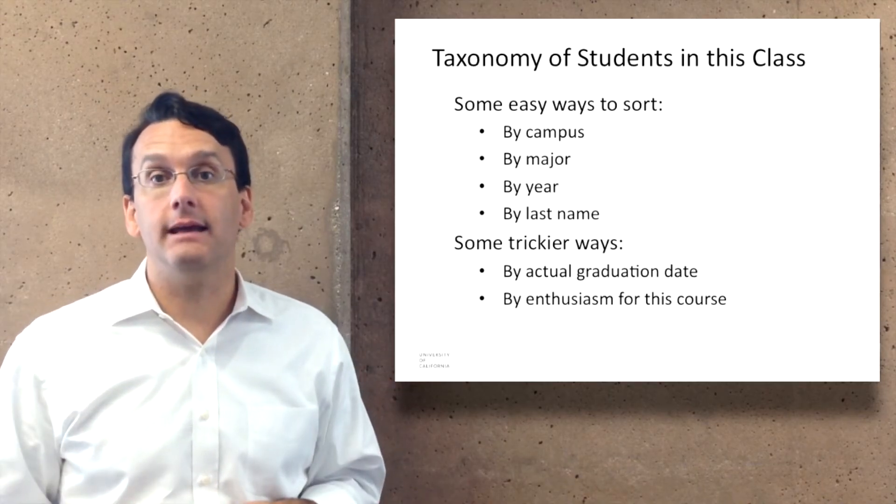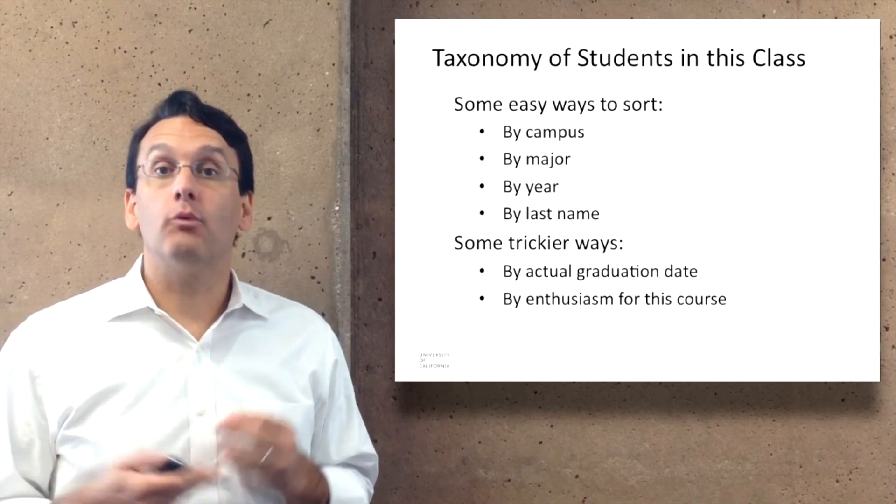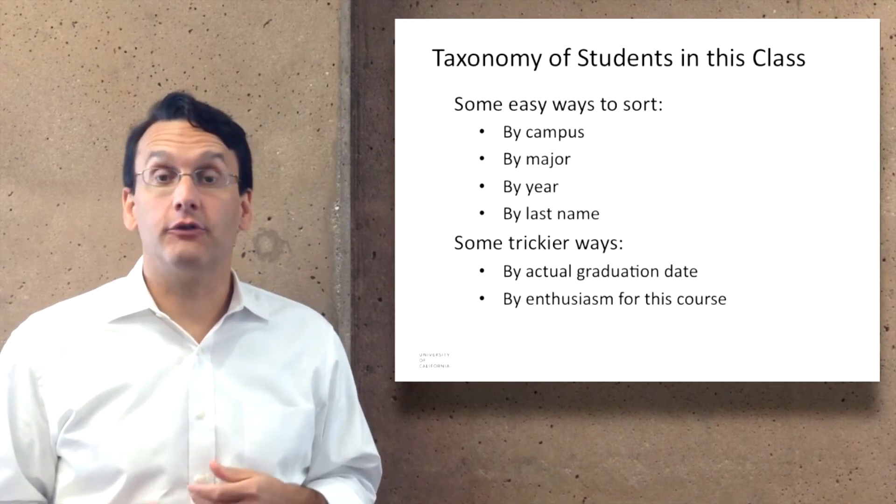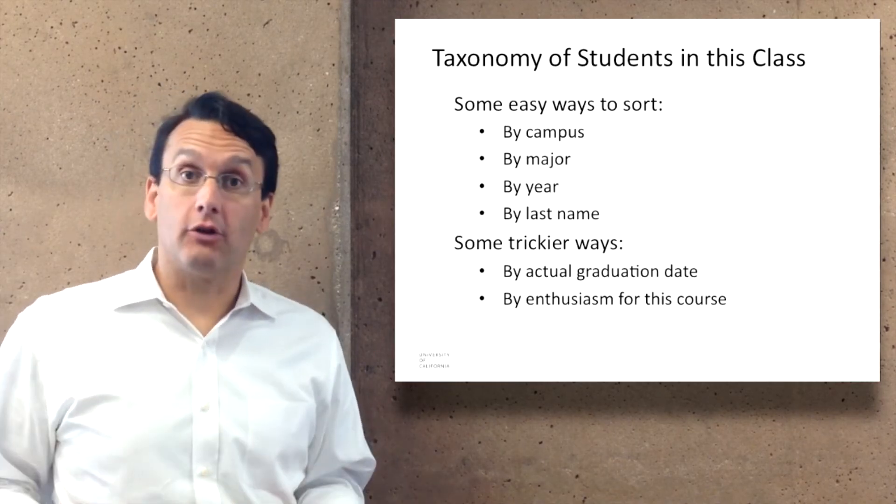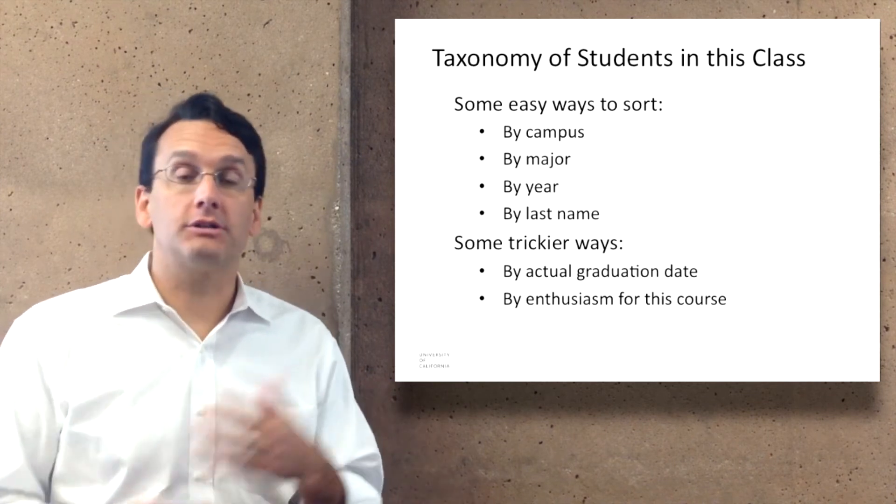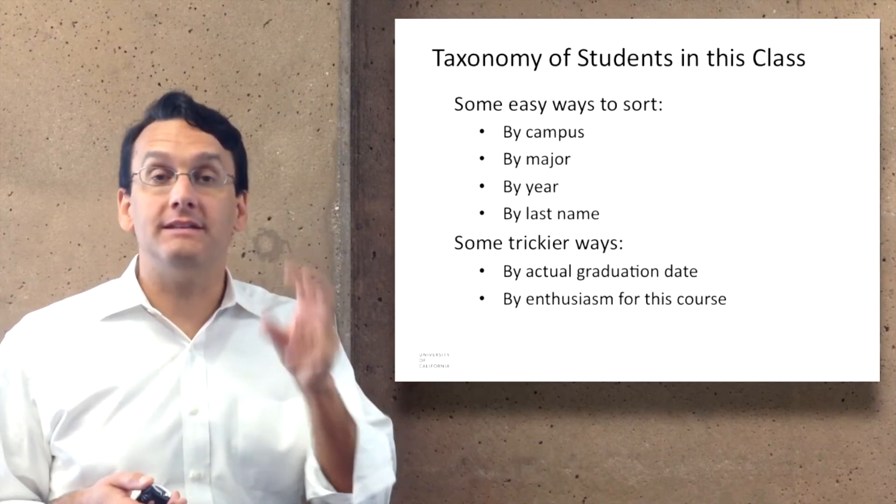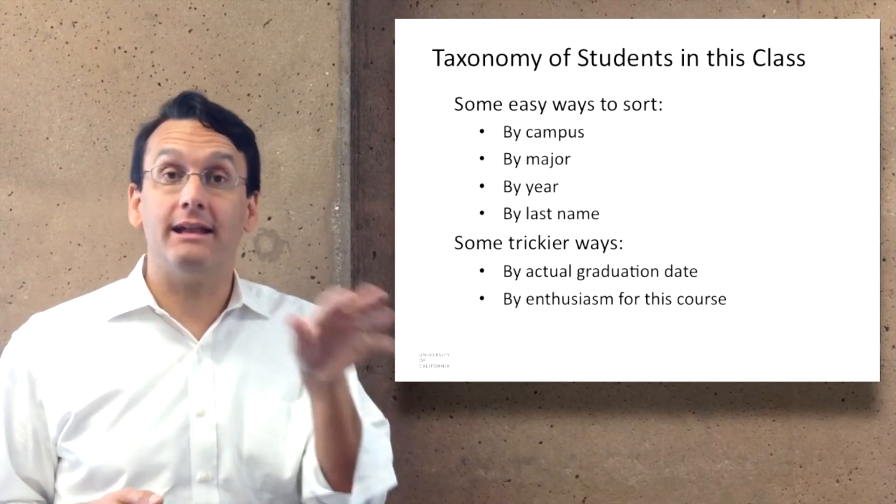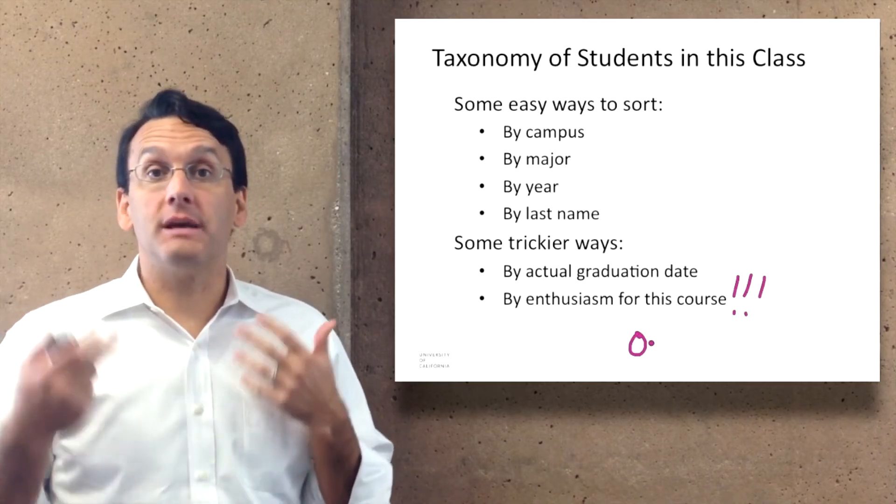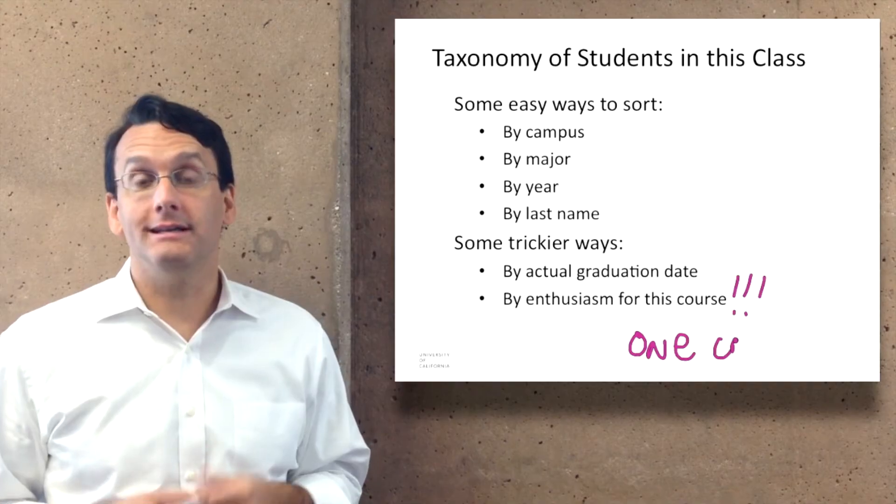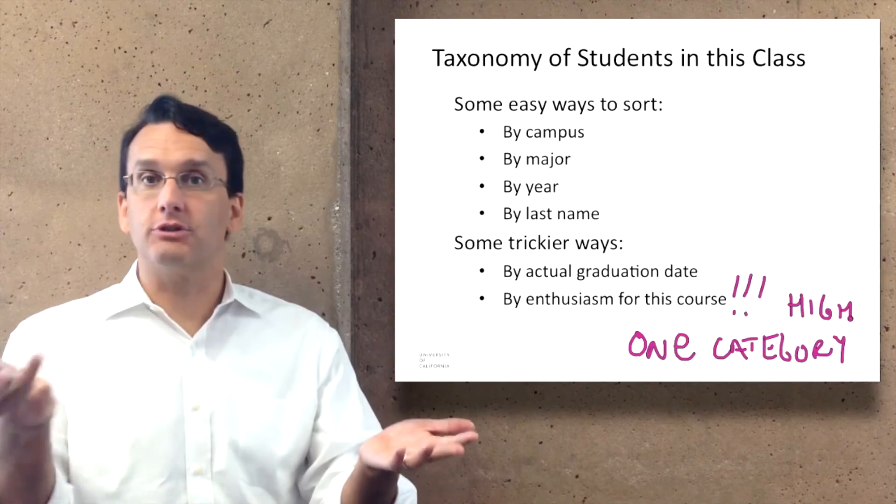But there are some other ways that make it trickier. For example, sorting students by their actual graduation date would be difficult right now because some of you may take an extra year, some may finish quickly, some may not finish at all, and so that would be something where it would be difficult to form a taxonomy with that as one of the distinguishing criteria. Alternately, distinguishing students by enthusiasm for this course is difficult because how do you measure it? It's difficult to pin down whether student A's enthusiasm is greater or less than student B's enthusiasm.